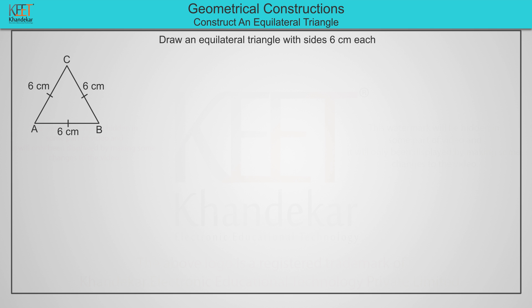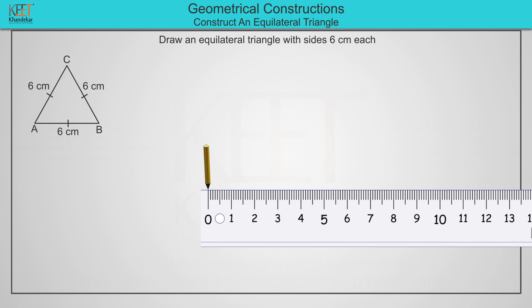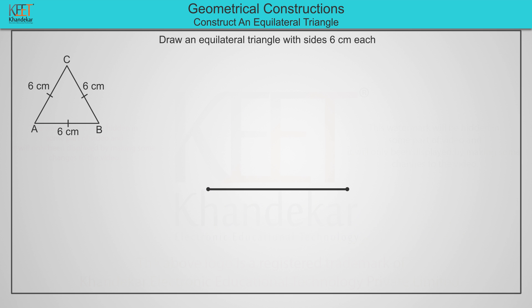Now to construct the triangle ABC, draw a line segment of 6 cm. Name the endpoints as point A and point B.